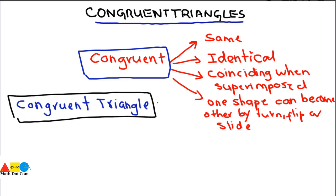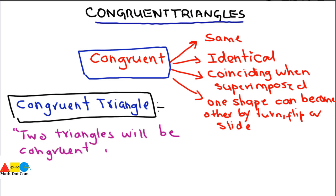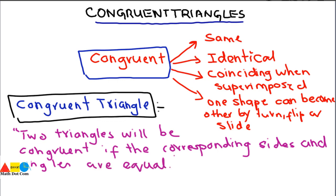Two triangles will be congruent if the corresponding sides and angles are equal. We have mapped the concept of congruent onto triangles: two triangles will be congruent or same if their sides and angles are equal. Since a triangle is specifically defined by its sides and angles, to check if two triangles are the same we must examine both.